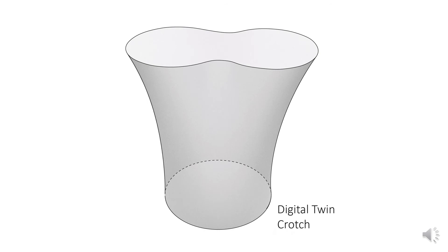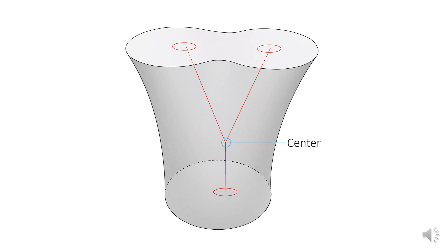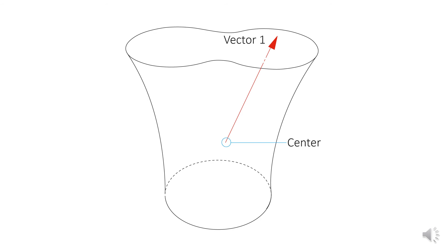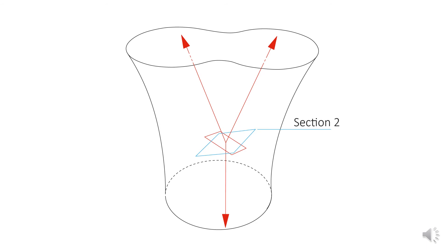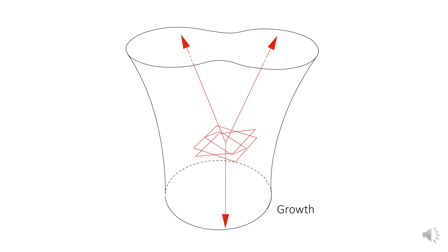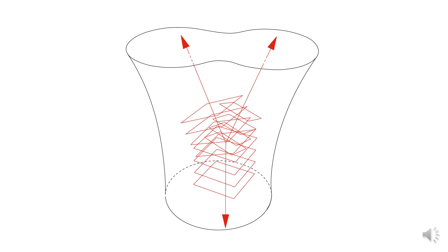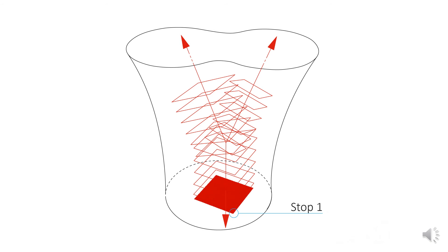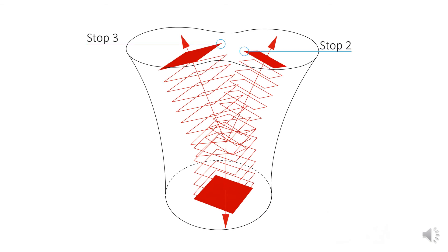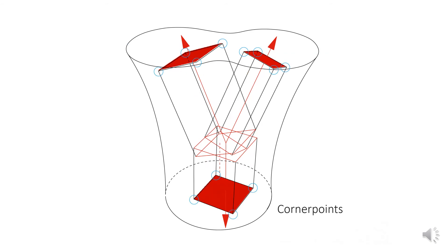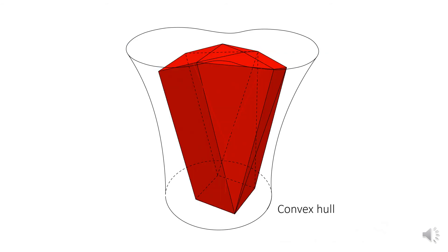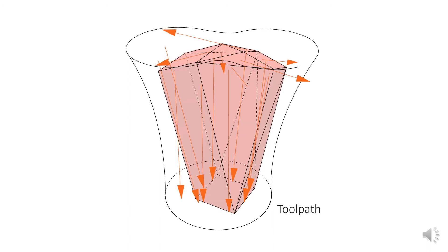Starting with the digital twin of the crotch geometry, we identify the pith in the center of the crotch and calculate the vectors of the branches. Based on this input and the structural analysis of the intended structure, the planes and required section geometry are defined, which then grow until they reach the boundaries of the crotch geometry. The corner points of the final position of the sections are used to generate the convex hull. Before finalizing, the cutting sequence and toolpath for robotic fabrication are generated.